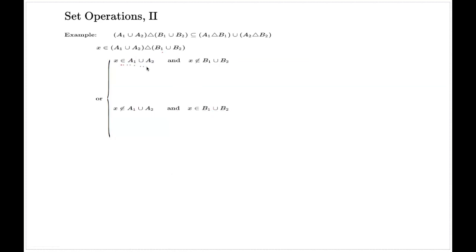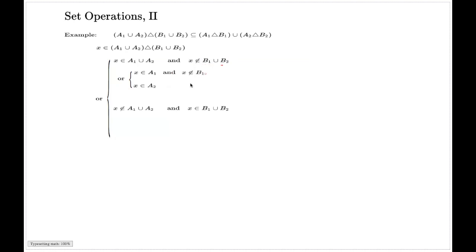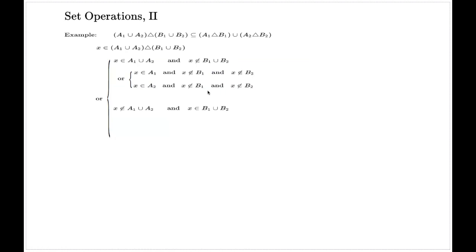Each of these possibilities can now be branched out further. The first possibility means X belongs to either A1 or A2 — one of these must happen — and at the same time X doesn't belong to B1 and X doesn't belong to B2. If X doesn't belong to the union, it doesn't belong to any of them. The same branching condition on X in relation to B1 and B2 applies throughout.